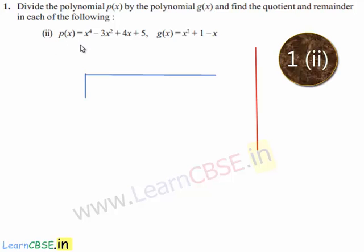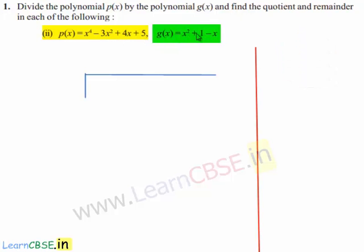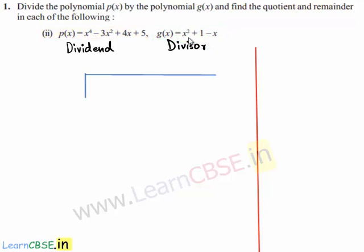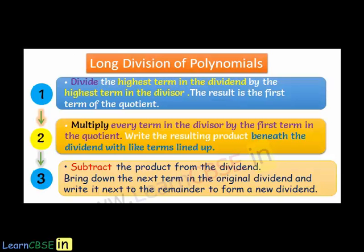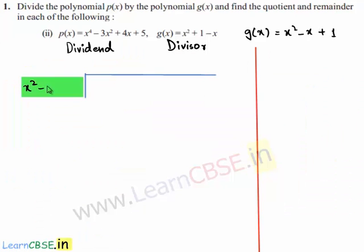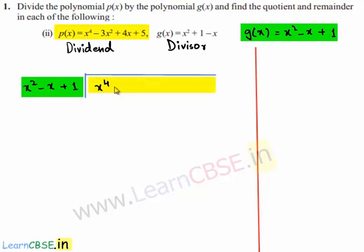Coming to the second part, p of x is equal to x power 4 minus 3x square plus 4x plus 5, and g of x is equal to x square plus 1 minus x. We are asked to divide the polynomial p of x by the polynomial g of x. p of x will be the dividend and g of x will be the divisor. Also, g of x is not in standard form, so we write it as g of x is equal to x square minus x plus 1. We write the divisor x square minus x plus 1 here and the dividend x power 4 minus 3x square plus 4x plus 5 here.